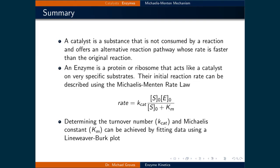In this lecture, our objective was to quantify rate law expressions for enzyme-catalyzed reactions. Here is a summary of what we covered. A catalyst is a substance that is not consumed by a reaction and offers an alternative reaction pathway whose rate is faster than the original reaction. An enzyme is a protein or ribosome that acts like a catalyst on very specific substrates. Their initial reaction rate can be described using the Michaelis-Menten rate law. And determining the turnover number, or Kcat, and the Michaelis constant, Km, can be achieved by fitting data using a Lineweaver-Burk plot.